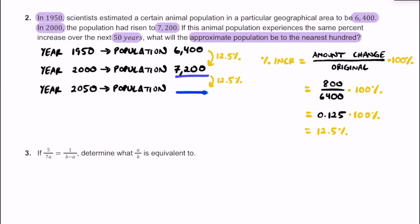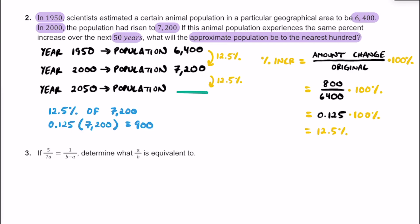When we go from 7,200 to the amount in 2050, even though we're going up by 12.5%, we won't be increasing by 800 because we have a greater population. To figure out how much the population is changing, we take 12.5% of 7,200, which is 0.125 multiplied by 7,200, giving us a total increase of 900. So if we add 7,200 plus 900, we get a new population in 2050 of 8,100 animals.